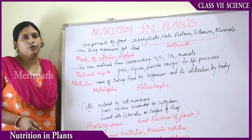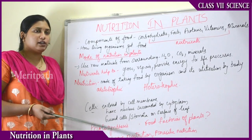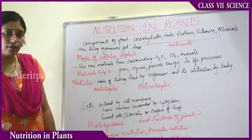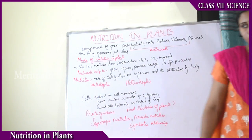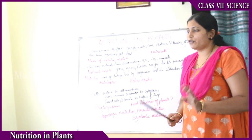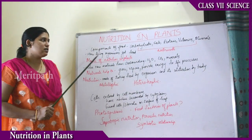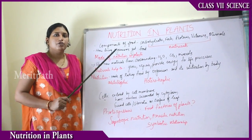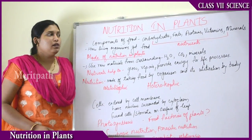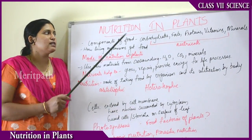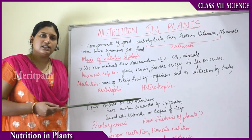Human beings are either vegetarians or non-vegetarians. Vegetarians depend on plants for food, whereas non-vegetarians also depend on animals. Nutrition is always about the intake of food. Plants require food for growth, energy, reproduction, metabolism, tissue repair — for everything, plants require food.